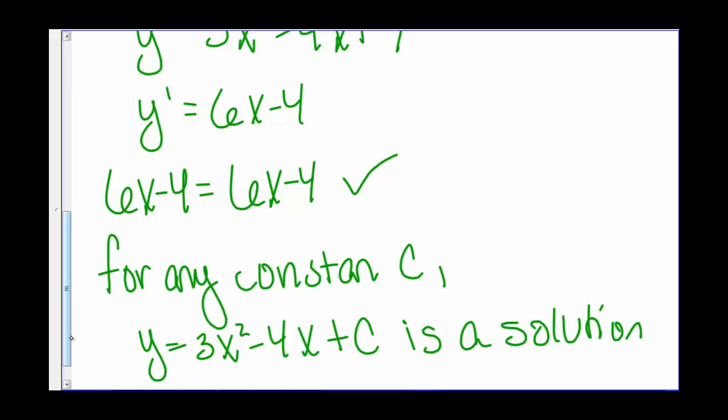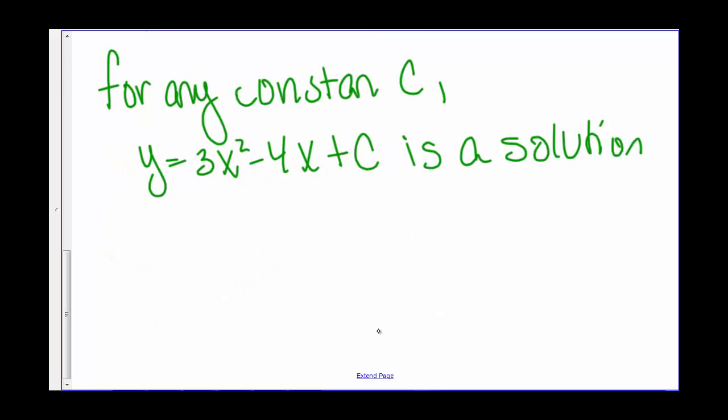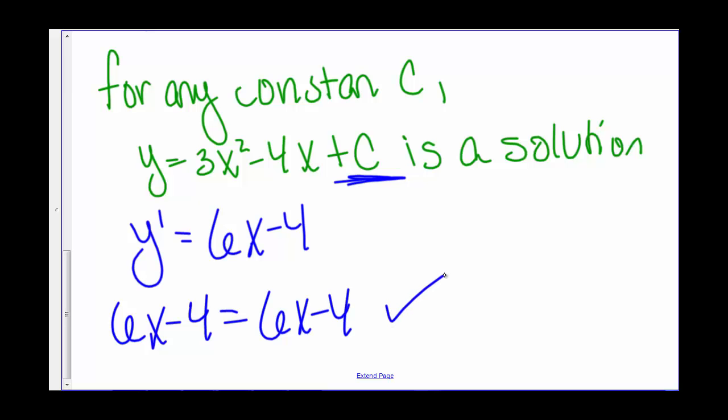So let's go ahead and verify that. Taking the derivative, y' = 6x - 4. Because no matter what C is, it's a constant, so it's going to go away. So we'll always have 6x - 4 equals 6x - 4. And we've verified that any equation in this form is a solution.